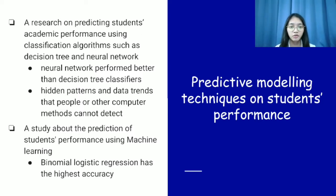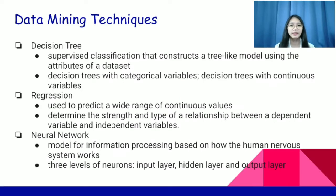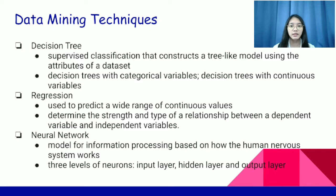The results show that binomial logistic regression has the highest accuracy among the others. In data mining techniques, a decision tree is a type of supervised classification that constructs a tree-like model using the attributes of a dataset. Decision trees can have categorical or continuous variables; a decision tree with a continuous variable is also called a regression tree. Regression is a type of data mining used to predict a wide range of continuous values, and it is a statistical method used to determine the strength and type of relationship between a dependent variable and one or more independent variables.